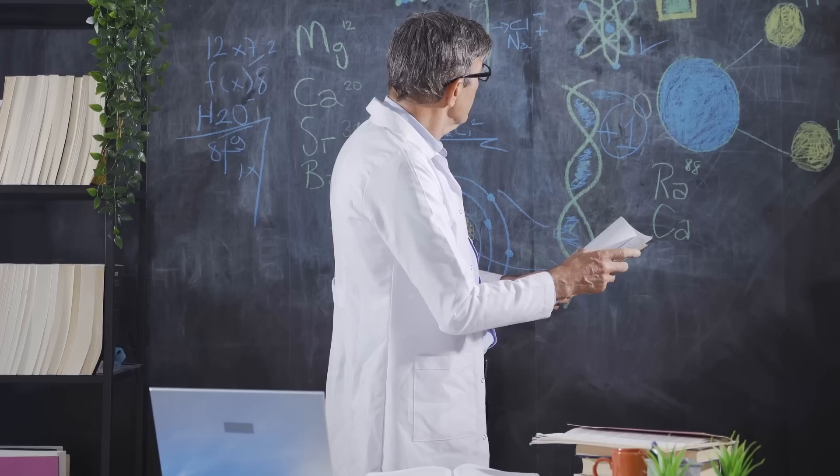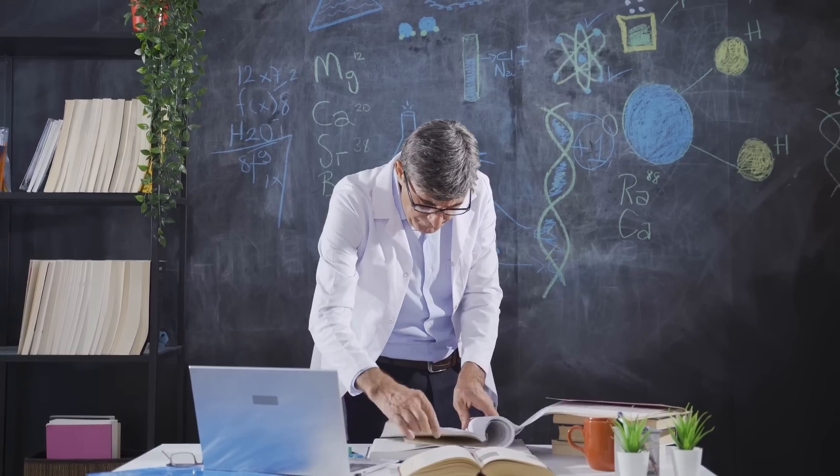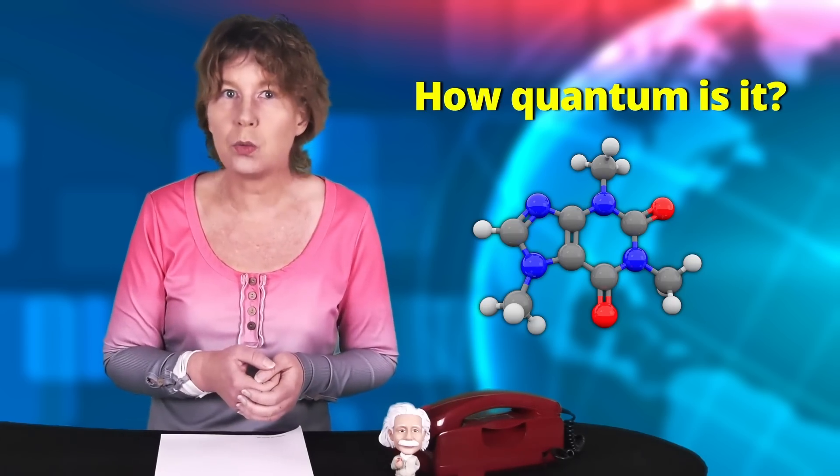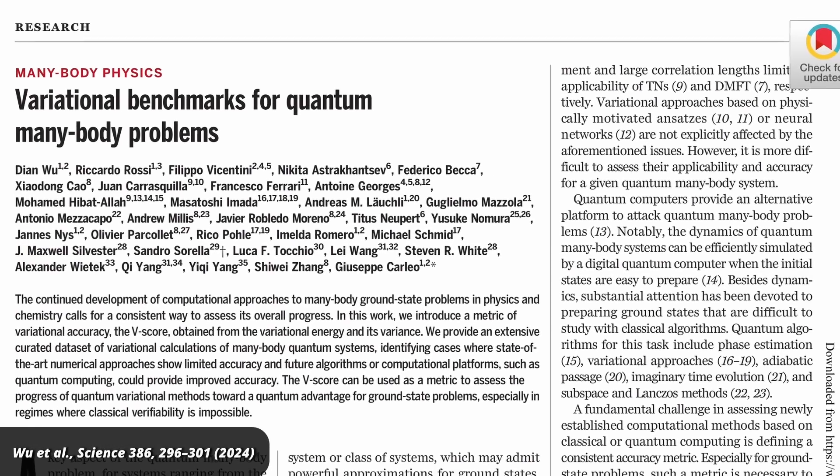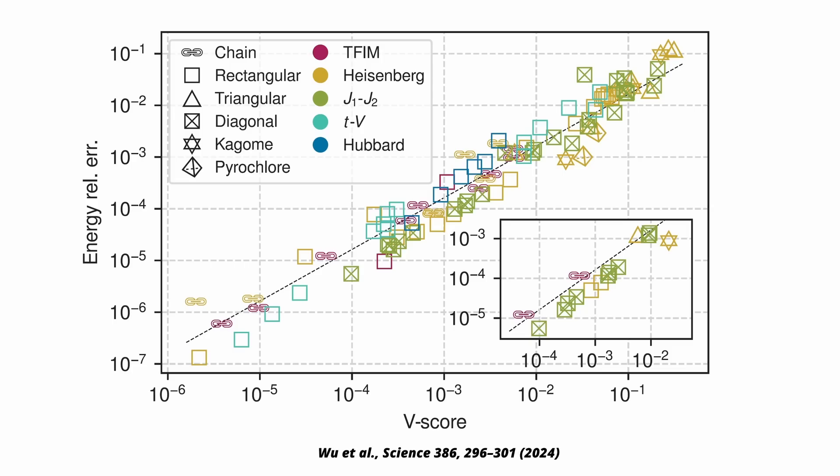But maybe you don't need a quantum computer to get the job done. Maybe a well-trained neural network with some physical rules will do. Indeed, just last month, a paper appeared in Science documenting how AI is filling in exactly this niche very quickly. The reason is, loosely speaking, that a lot of molecules and materials are quantum, but not a lot so. You just don't need all these possibilities that a quantum computer offers.